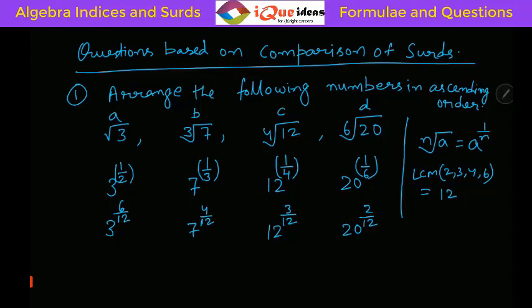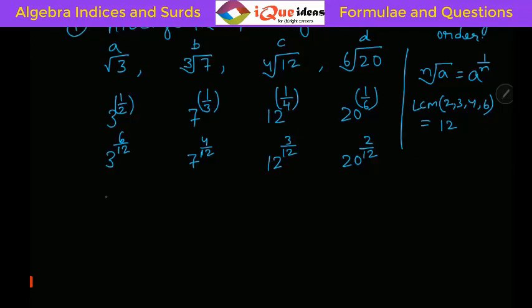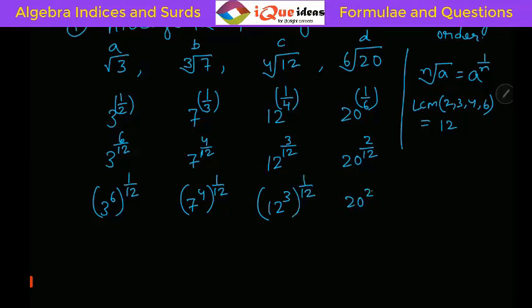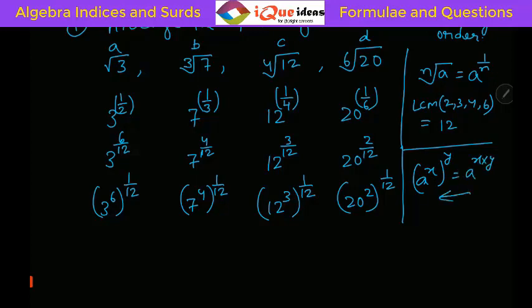Now these numbers can all be rewritten using the rule that a^(x·y) = (a^x)^y. So 3^(6/12) = (3^6)^(1/12), 7^(4/12) = (7^4)^(1/12), 12^(3/12) = (12^3)^(1/12), and 20^(2/12) = (20^2)^(1/12). Calculating: 3^6 = 729, 7^4 = 2401, 12^3 = 1728, and 20^2 = 400. So we have 729, 2401, 1728, and 400 all raised to the power 1/12.